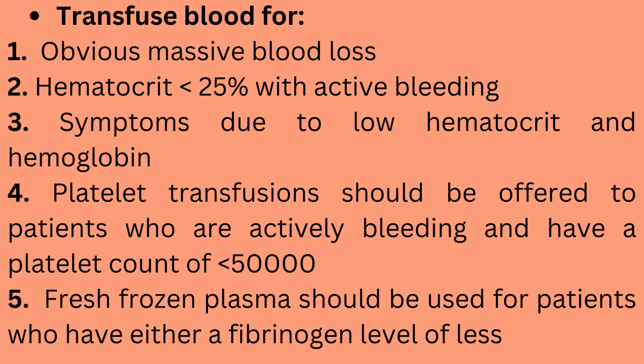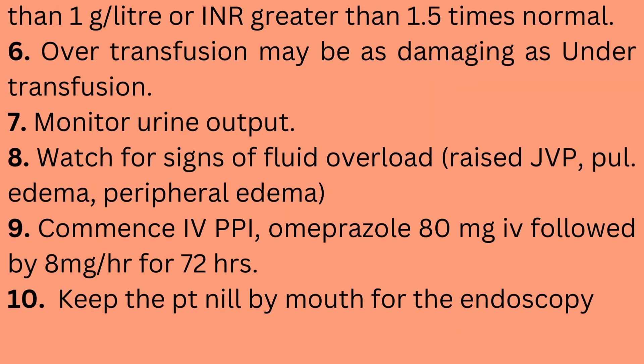Transfuse blood for obvious massive blood loss, hematocrit less than 25% with active bleeding, or symptoms due to low hematocrit or hemoglobin. Platelet transfusion should be offered to patients who are actively bleeding with a platelet count less than 50,000. Fresh frozen plasma should be used for patients with fibrinogen less than 1 gram per liter or INR greater than 1.5 times normal. Over-transfusion may be as damaging as under-transfusion. Monitor urine output and watch for signs of fluid overload: raised JVP, pulmonary edema, and peripheral edema.